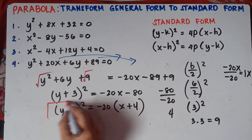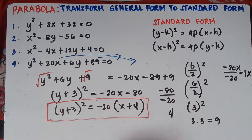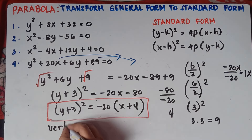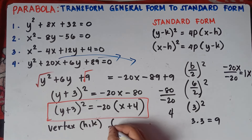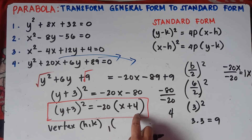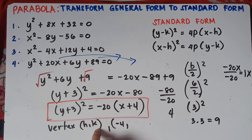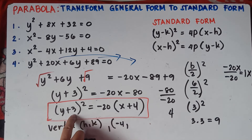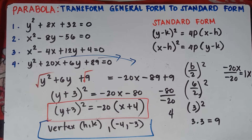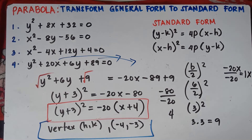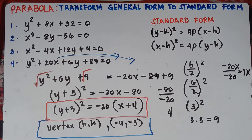That's the answer for number 4. For the vertex — h and k: h is beside x, and this is positive 4, so get the additive inverse — h is negative 4. k is beside y — this is positive 3, so k is negative 3. Vertex for number 4 is (negative 4, negative 3). That's all for numbers 1 to 4. If you have questions, feel free to leave a comment in the comment section down below.